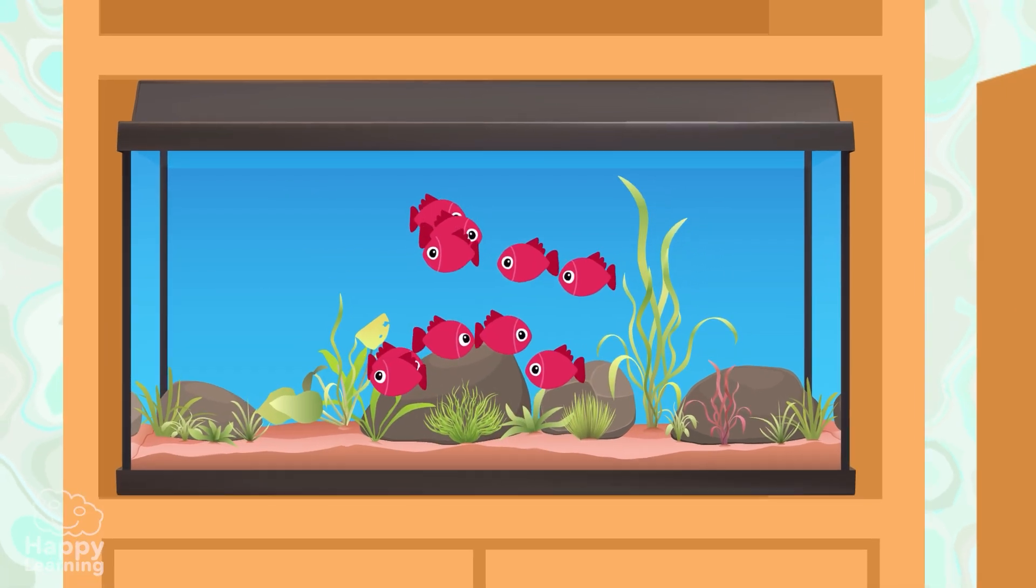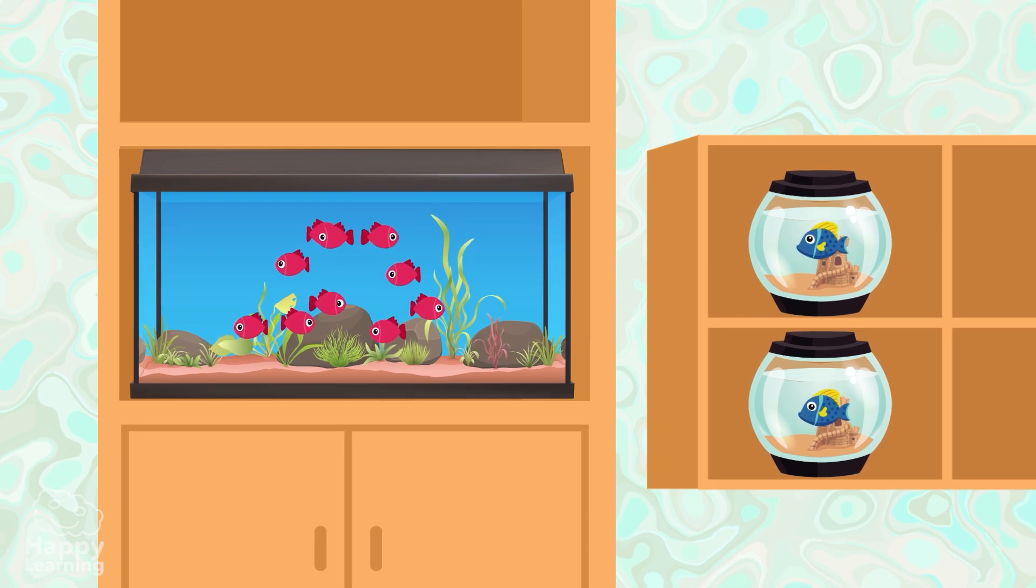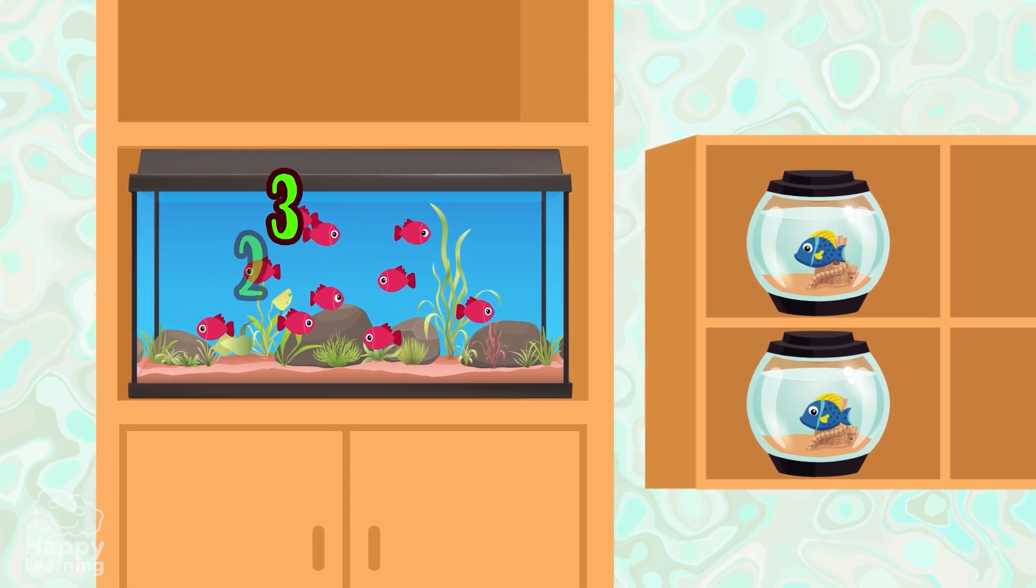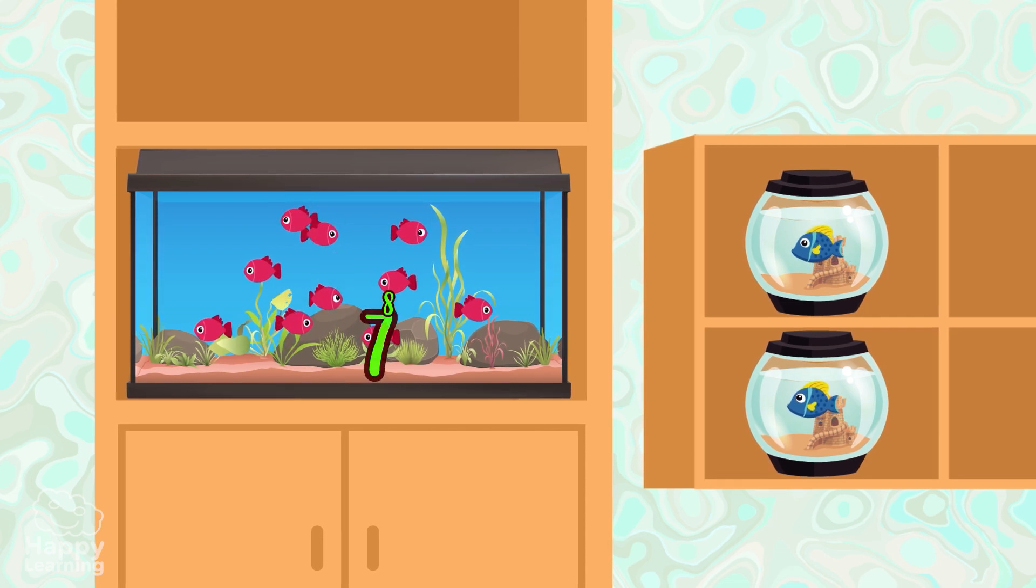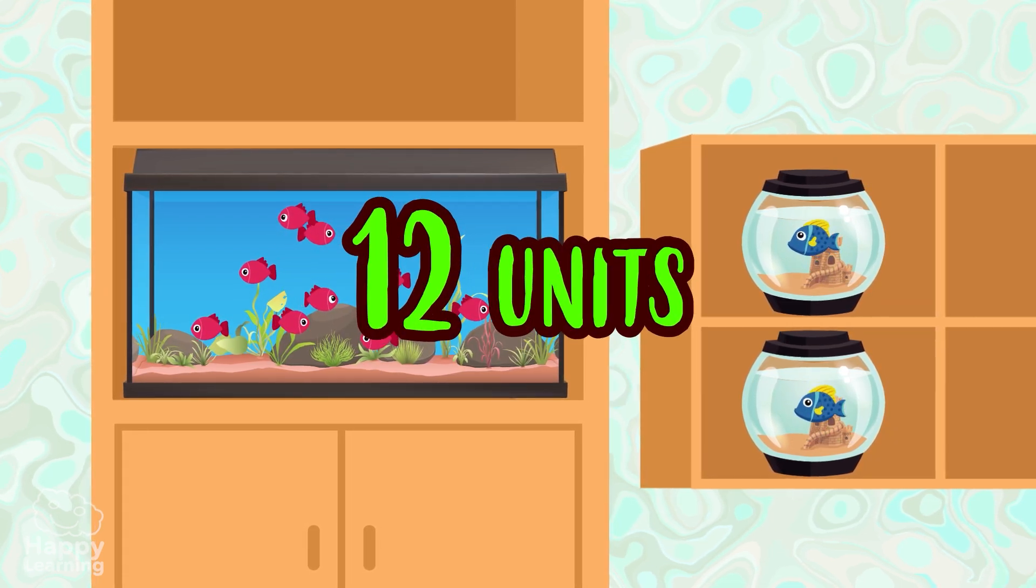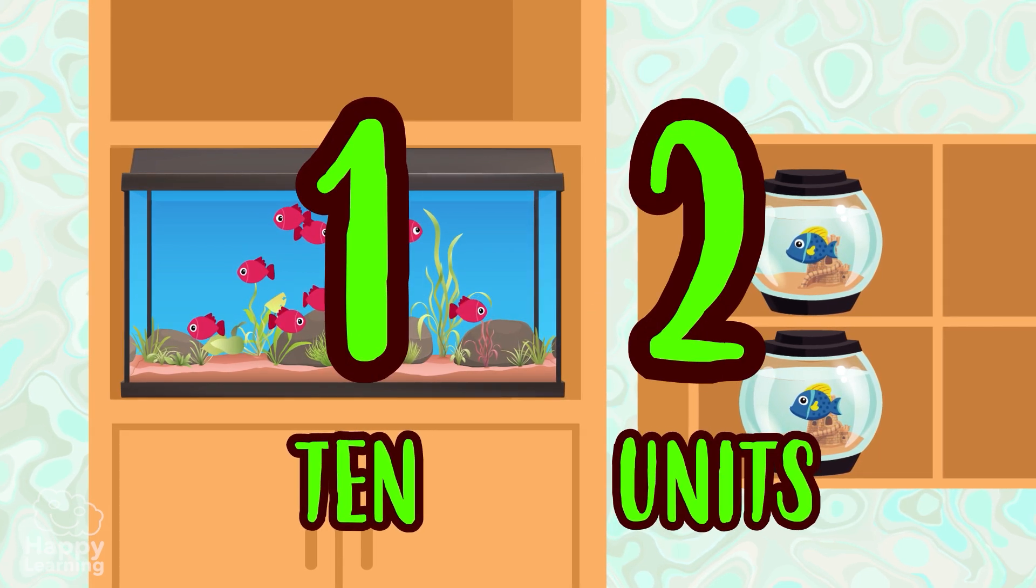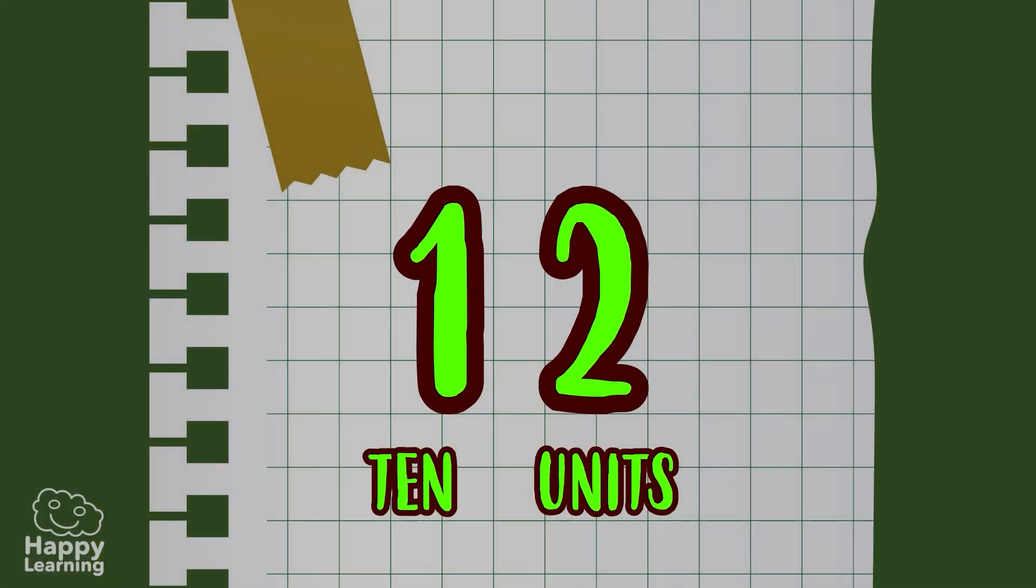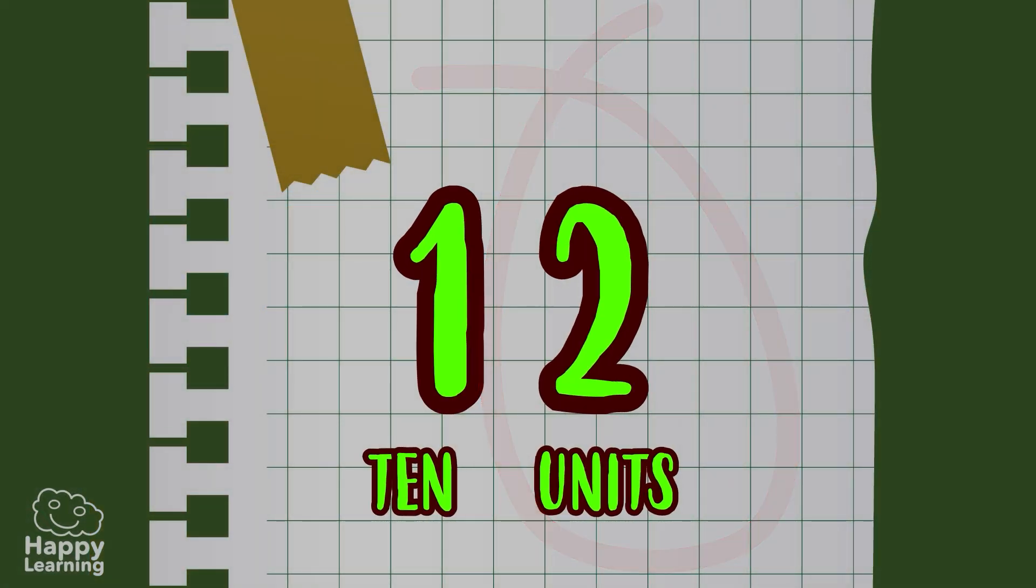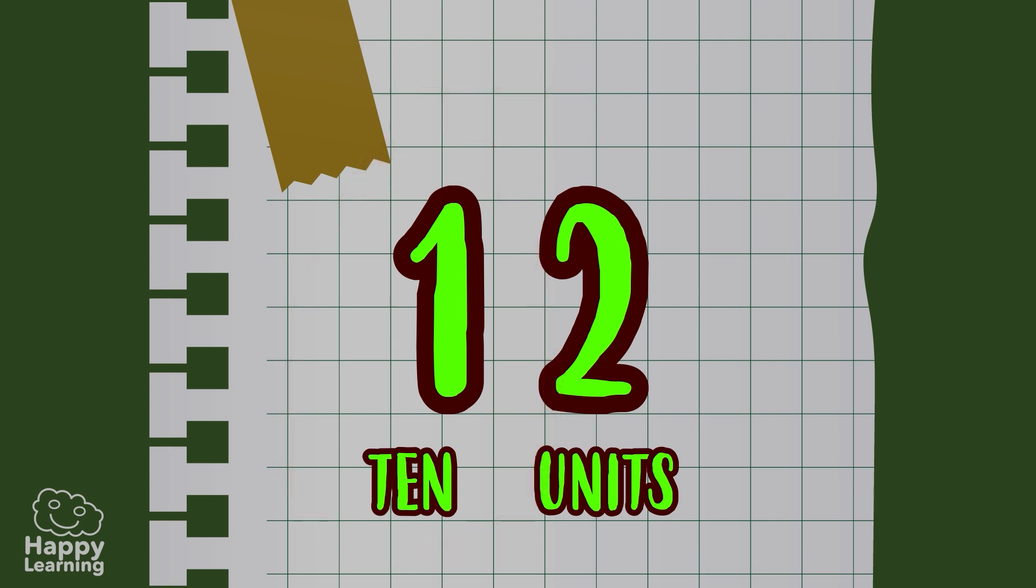Let's leave our fish tank here because here come two more fish. If we count them all now we'll have 12 units, 12 fish, or in other words a ten and an additional two units. I write it like this: units in the first position starting from the right, and the tens in the second position, always starting from the right.